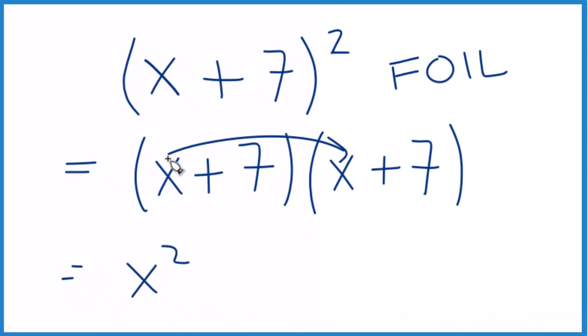Then we take the outside, x times 7, that gives us 7x. We take the inside, 7 times x, that's 7x. And then we take the last term, 7 times 7, and that is 49.